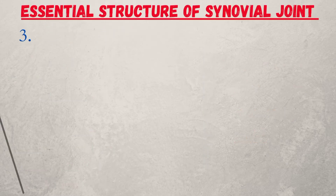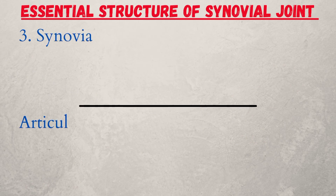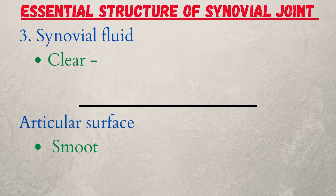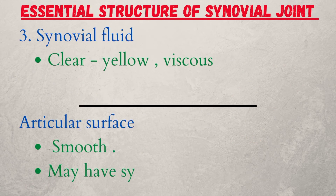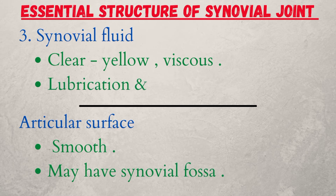Three, synovial fluid — clear, yellow, and viscous. It functions in lubrication and nutrition of the articular surface. The articular surface is smooth and may have a synovial fossa.